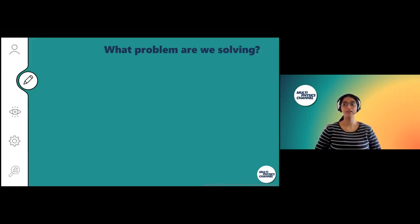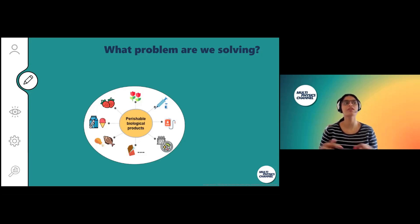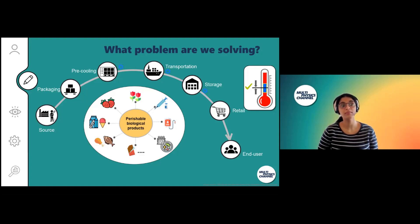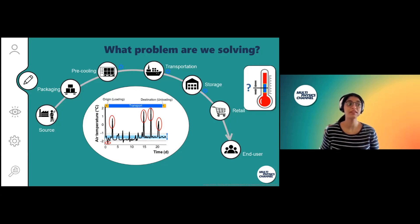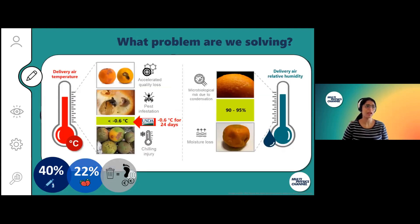Before I delve into the topic, I want to describe what problem we're solving. We see a lot of perishable biological products around us, and these often have to travel very long distances to reach us. One critical element is that they must be maintained within a narrow range of temperature, but this is often not possible in commercial cold chains. As a result, we have a lot of losses — for fresh fruits, if temperature goes too high we have fast quality loss, and if it goes too low we have chilling injury.